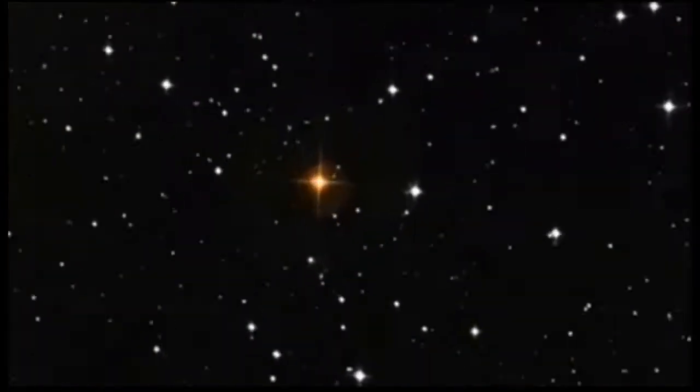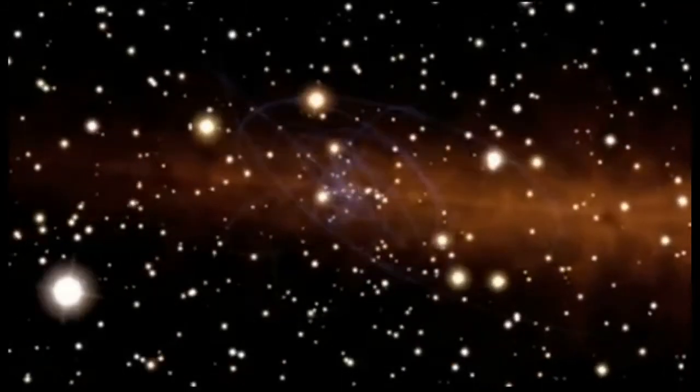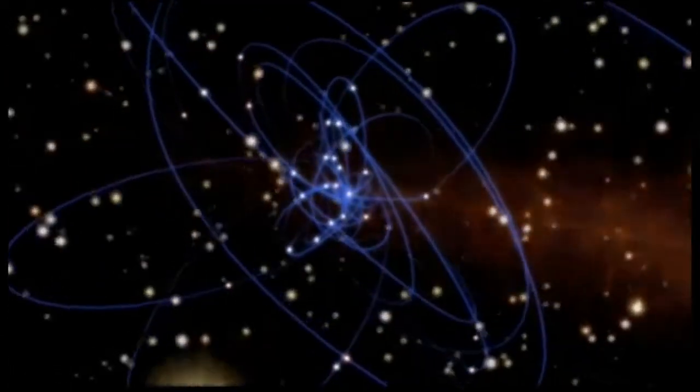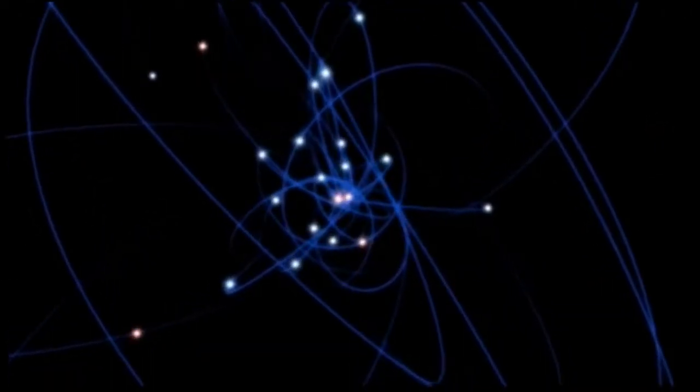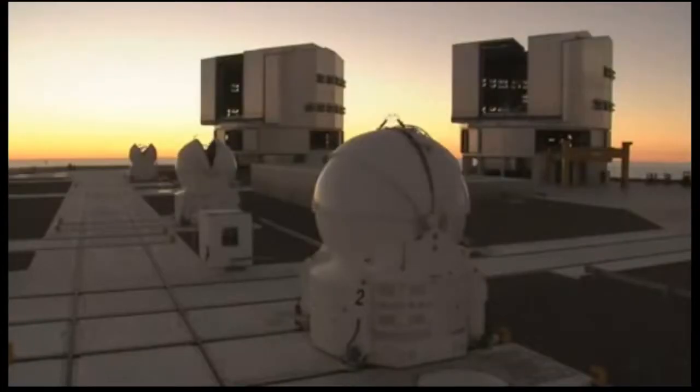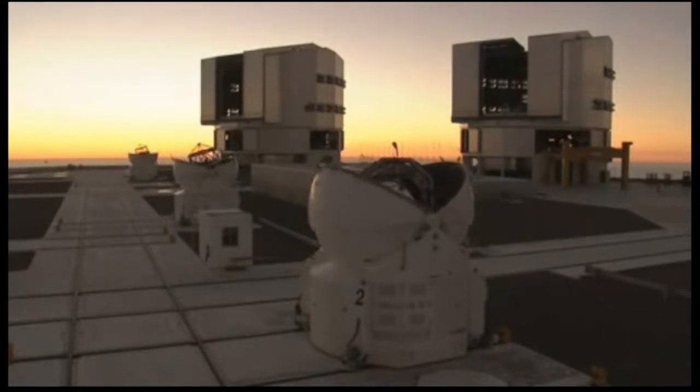This is Dr. J, signing off for the ESOcast. Join us again next time for another big adventure. Imagine looking up at the night sky and seeing details on the surface of a star millions and millions of kilometers away. Imagine having eyesight so keen that you could check out the surroundings of a black hole. Using ESO's Very Large Telescope Interferometer at Paranal, astronomers are now making these fantasies a reality.